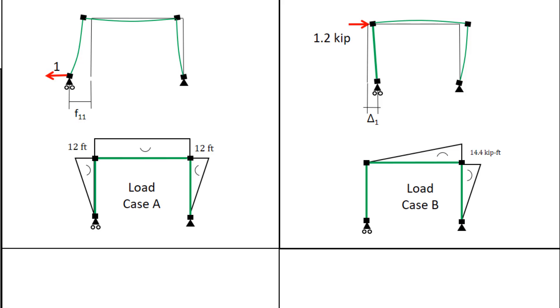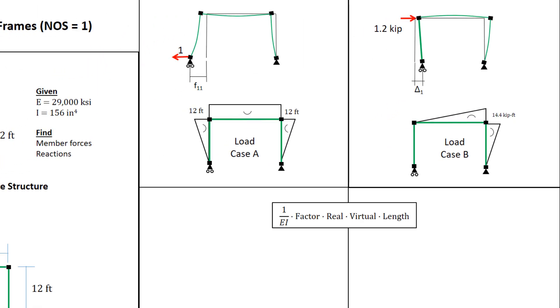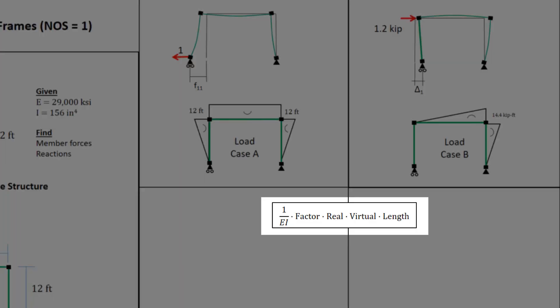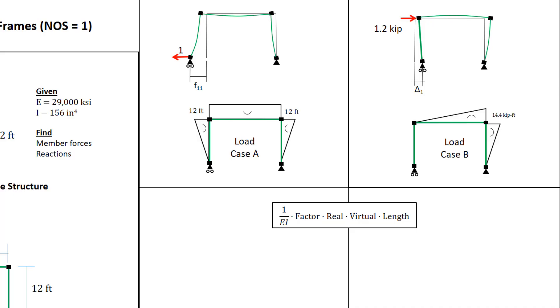We'll be using the method of virtual work to calculate these factors, F11 and delta 1. The general equation is 1 over EI times an integration factor times the value of the real moment diagram times the value of the virtual moment diagram times the length of the member. We'll have to do this for each member and sum. Let's start with F11. In the case of F11, the real moment diagram — the moment diagram due to the force that causes the deflection — is load case A.